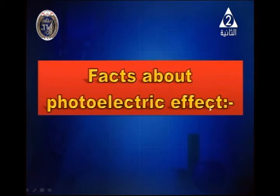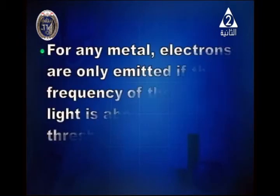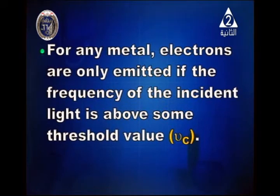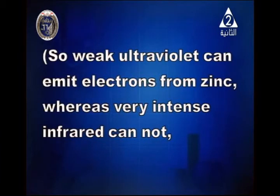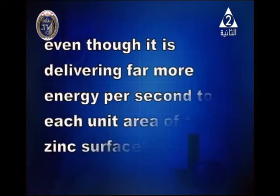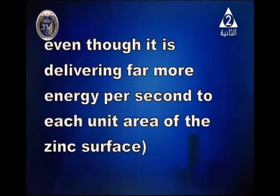We've got some facts concerning photoelectricity. For any metal, electrons are only emitted if the frequency of the incident light is above some threshold value νc. For example, weak ultraviolet — which has high frequency — can emit electrons from zinc, whereas very intense infrared cannot, even though it is delivering far more energy per second to each unit area of zinc surface.